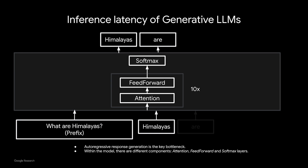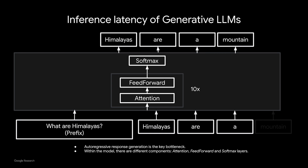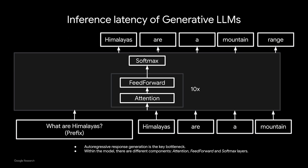Let's take a closer look at how these generative LLMs work. Suppose we are given a query or a prefix. Then most industry-grade LLMs generate tokens one by one in an autoregressive manner. Within each token generation, a bunch of attention computation is being done followed by feed-forward, and then in the end we apply a large softmax layer to predict a distribution over next tokens.